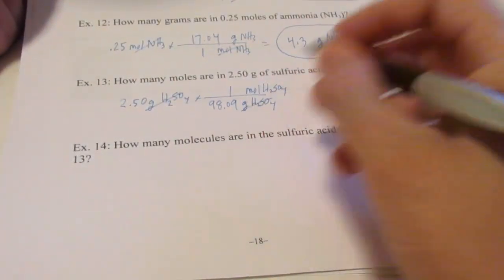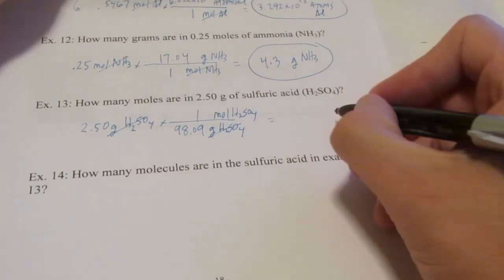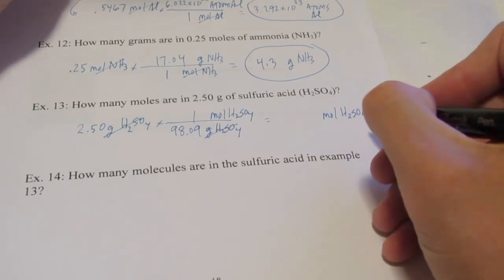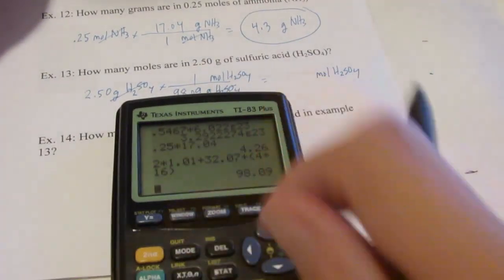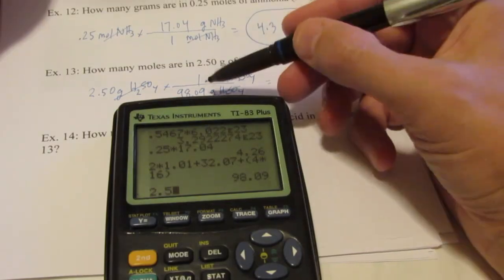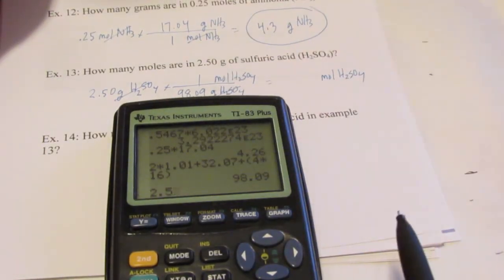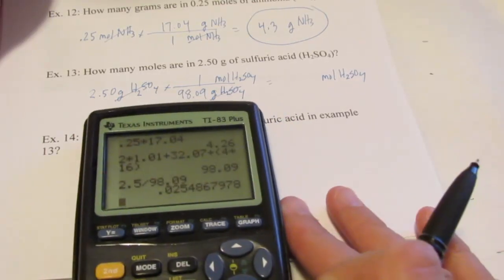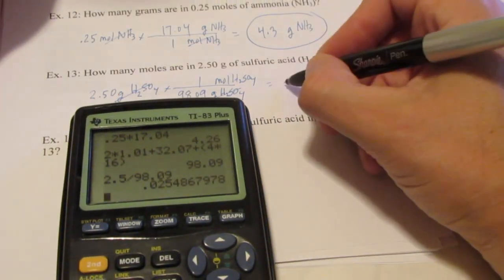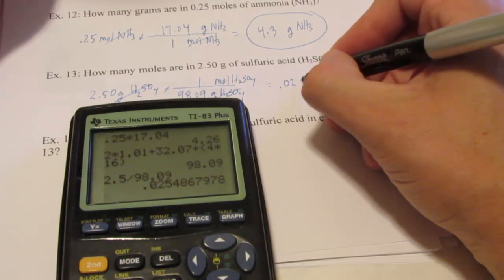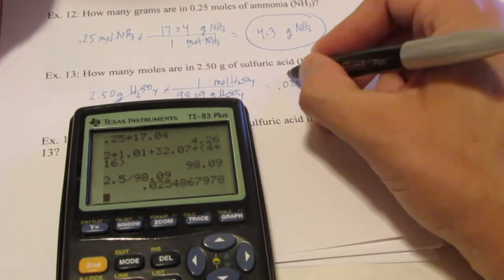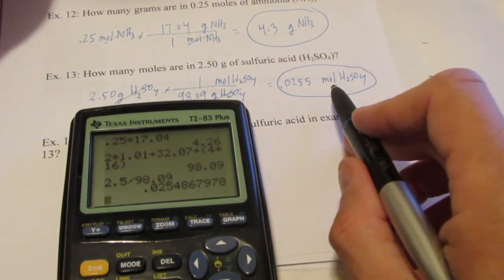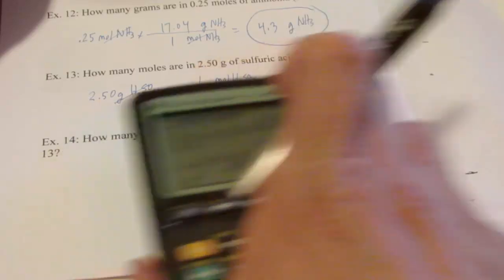So grams of H2SO4 are gone. And we're in moles of H2SO4. So let's see. 2.50 and 98.09's on the bottom. You know what we do with that. Divide. 98.09, enter. Three significant figures. 0.0255 moles of sulfuric acid. That's how many moles I would have if I had 2.50 grams of it.